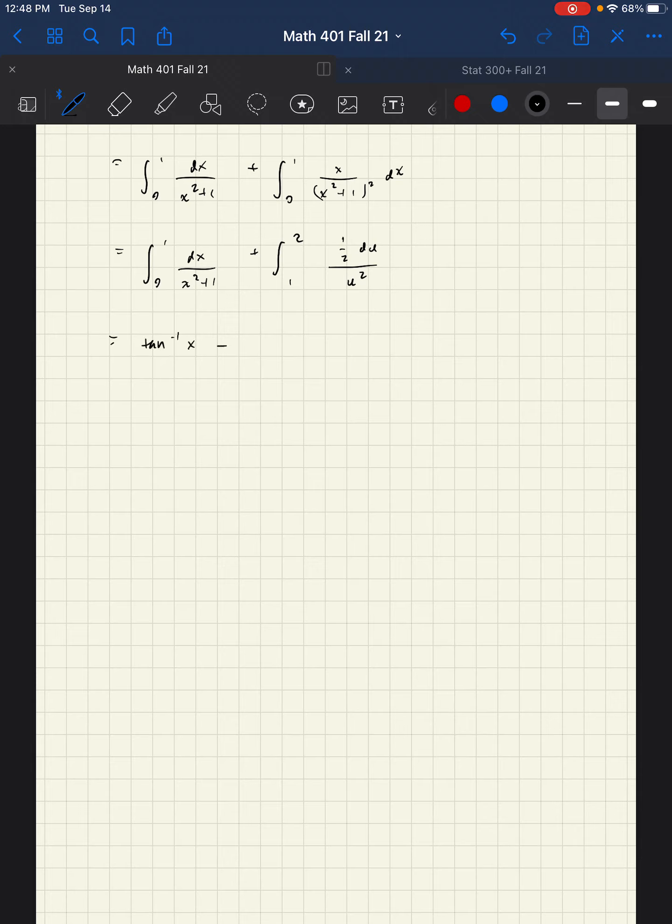So this is just going to be tan inverse of x from zero to one plus one half times, if that's u squared then that's going to be a negative one over u from one to two. So we have tan inverse of one minus tan inverse of zero minus, I'll just put the negative one half, one over u evaluated at two minus one over u evaluated at one.